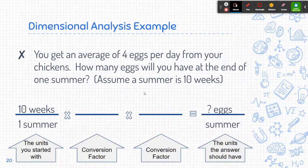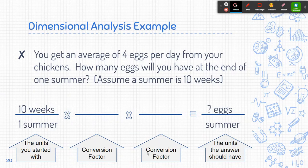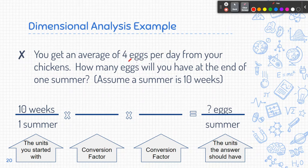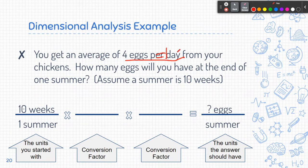And then once I have that, I need to get these conversion factors in the middle. So I'm starting with weeks. And then I also have a couple conversion factors. I have 4 eggs per day. So one day is going to be equal to, you could even think of it like one day is equal to 4 eggs. And then how many eggs will you have at the end of one summer? Okay so I can get days, but I don't have weeks. Okay so that means that I need to convert my weeks into days before I can convert my days into eggs.